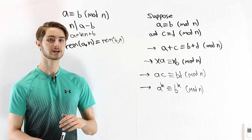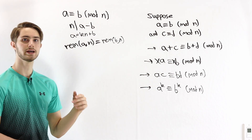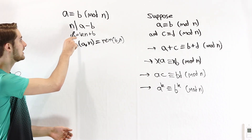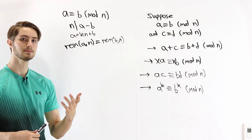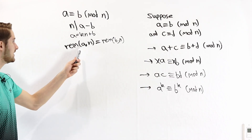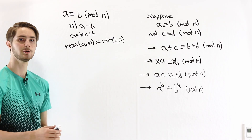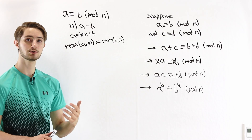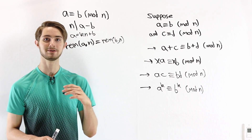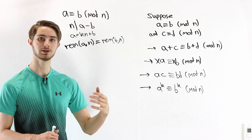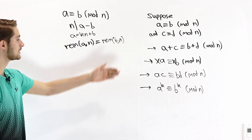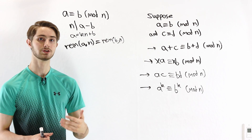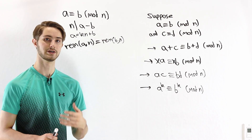Those are the fundamentals of congruence mod N. The definition is that N divides A minus B, which is equivalent to saying A and B have the same remainder when divided by N. From this, we showed congruence mod N is an equivalence relation, and derived arithmetic rules allowing us to add, multiply by constants, and multiply congruences — operations very similar to those for ordinary equality.